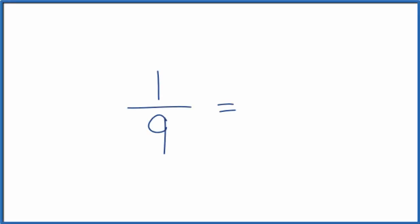Let's write three equivalent fractions for one-ninth. That's one over nine. So what we're trying to do is to write fractions that are equal to one-ninth, but have a different numerator and denominator.